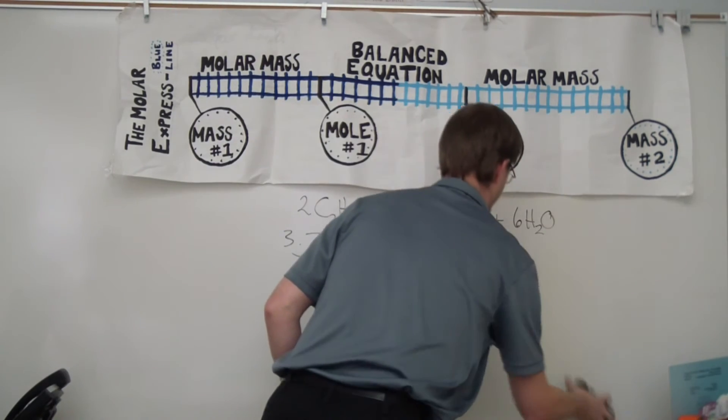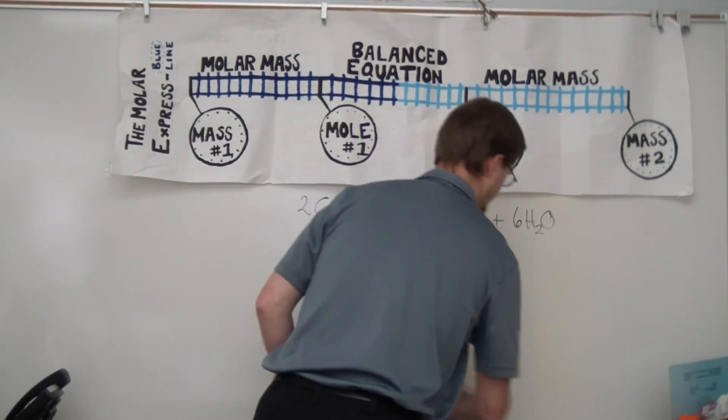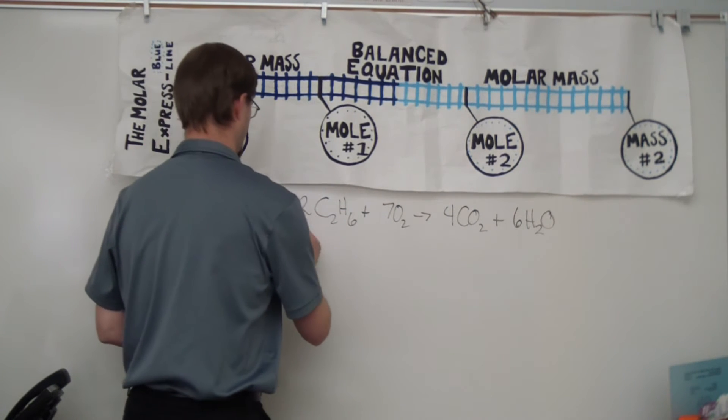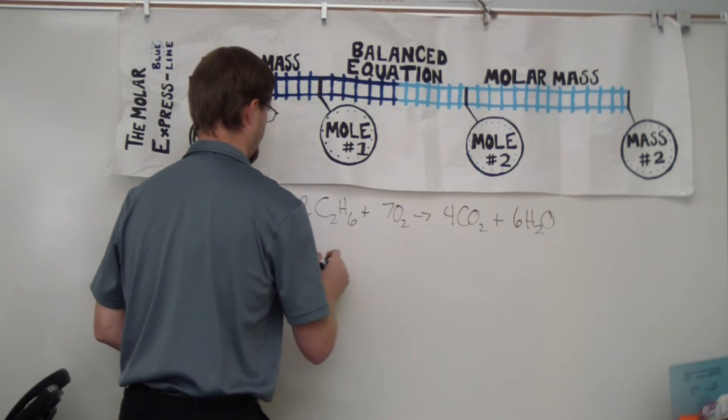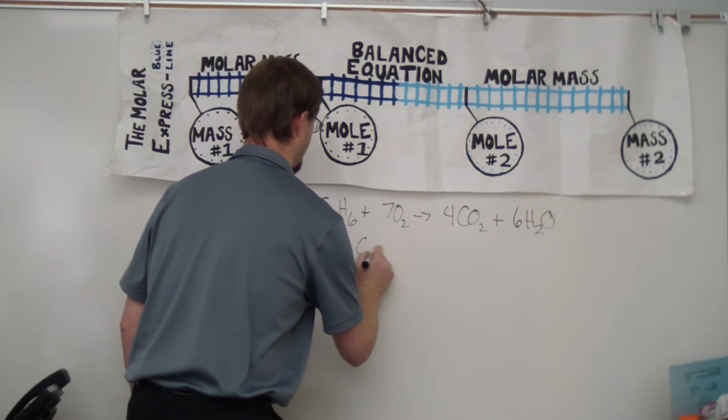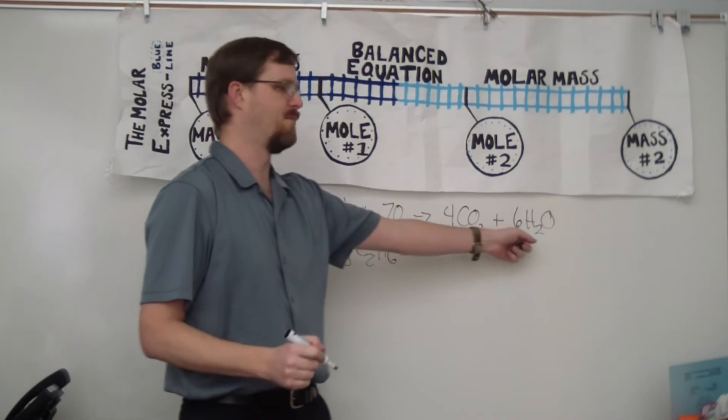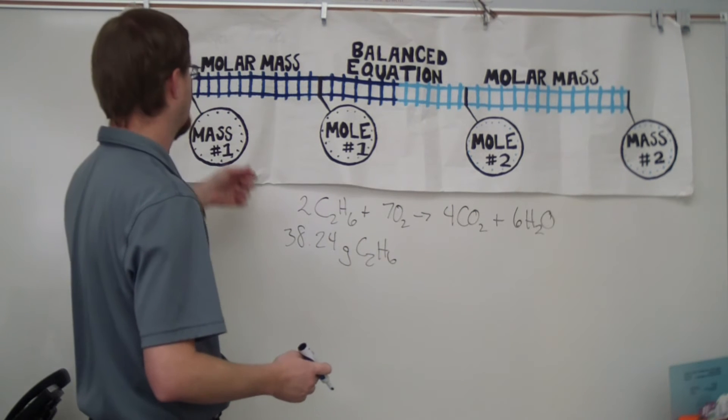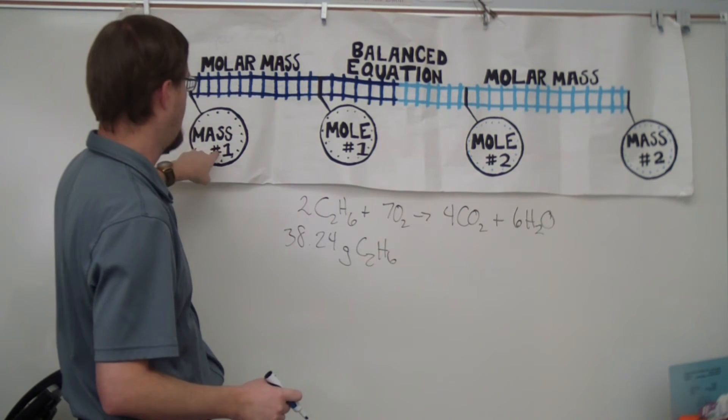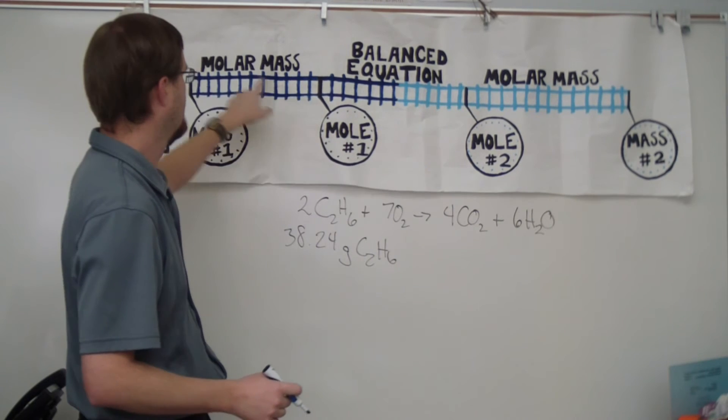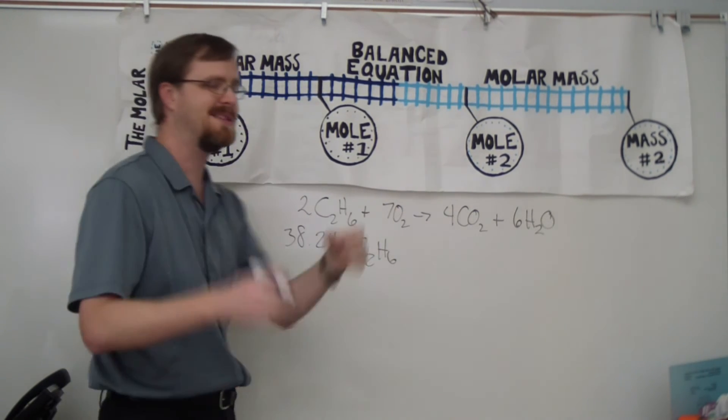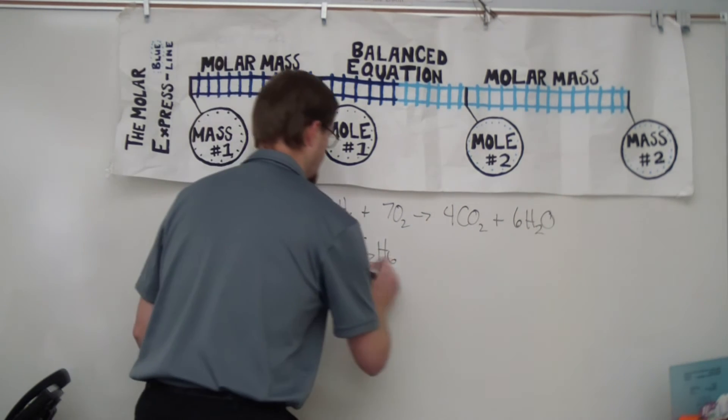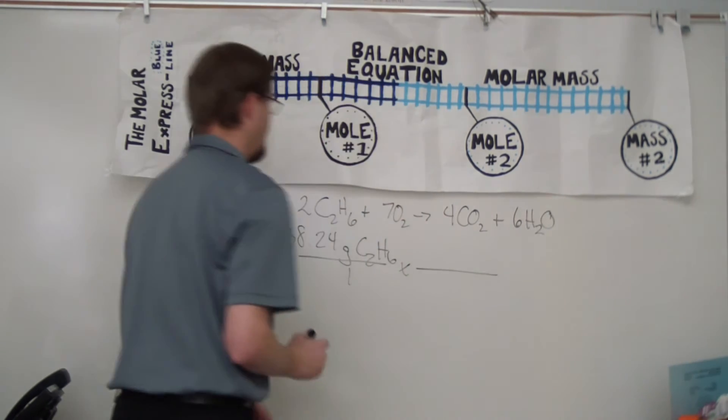Even if, for example, let's say that you have 38.24 grams of ethane. And then I want to know how many moles of water that is. That's not really changing anything, because I'm going to go from mass number one to moles number one using our molar mass, which is the exact same thing that we just did in all the previous calculations. So I'm actually not really adding anything new here.